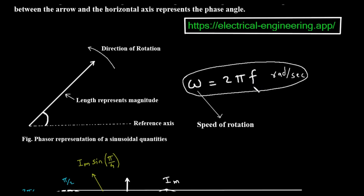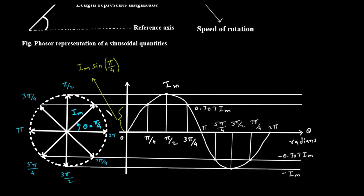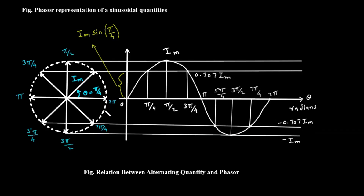So, to summarize this first part: a phasor is a rotating arrow. Its length is the peak value of the AC signal, its angle is the phase, and it rotates at a speed determined by the signal's frequency. Now let's connect this rotating arrow directly to the sine wave we are all familiar with. The next figure is titled "relation between alternating quantity and phasor," and this is a crucial concept to grasp.